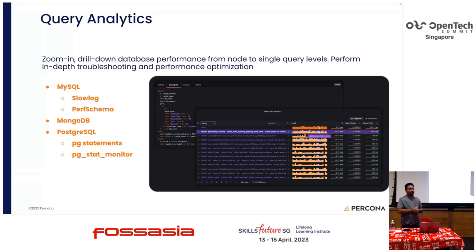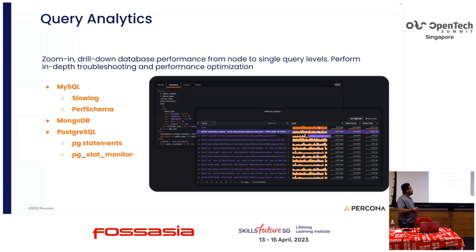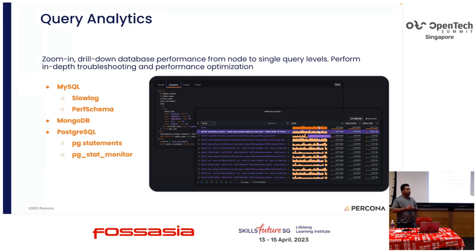Let's talk about Query Analytics. It's one of the most important features in PMM — it allows you to monitor the kind of workload running on your database, what queries are being executed, and which queries have performance issues. We support Query Analytics for all three databases. In MySQL you can use slow log or Performance Schema. In PostgreSQL we have pg_stat_statements and pg_stat_monitor — pg_stat_monitor is an extension Percona built that seamlessly integrates with PMM and gives far better insights compared to pg_stat_statements.